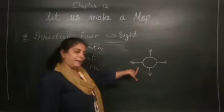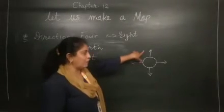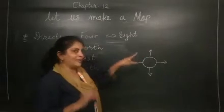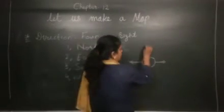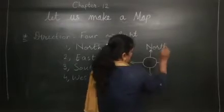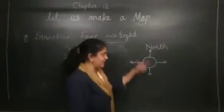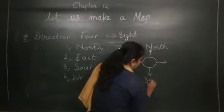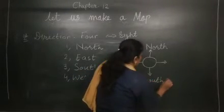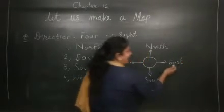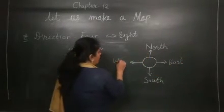In the map, if you see a map on top, so it's called the direction of north. And its opposite, the opposite of north side, it is a south direction. This side is east, and the opposite of east is west.